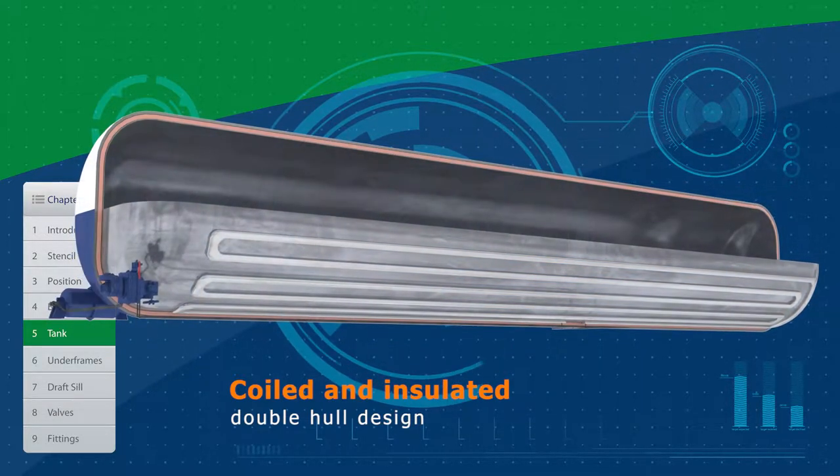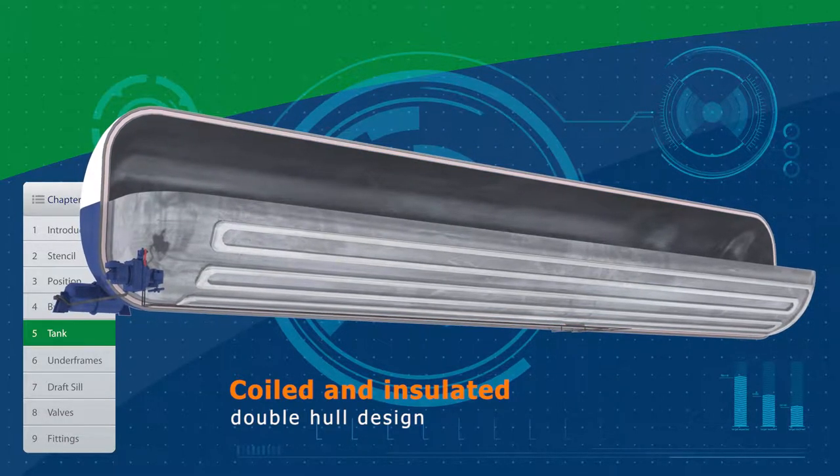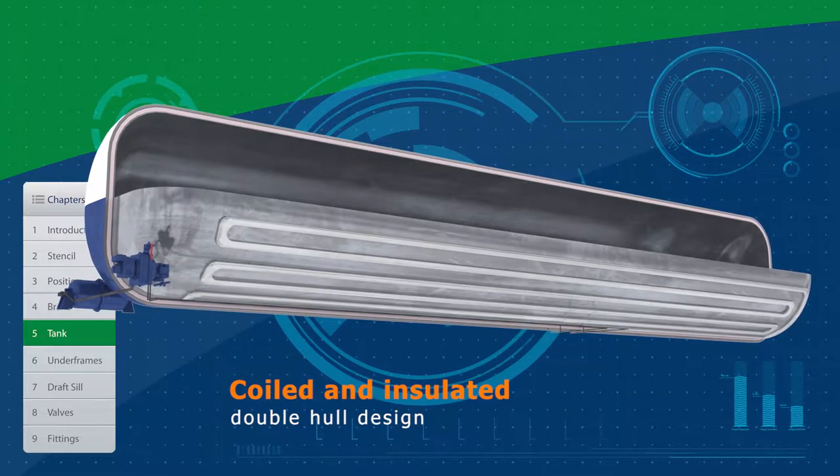Fiberglass insulation is wrapped around the inner tank. A thin external shell called a jacket made of 11-gauge carbon steel encloses the fiberglass insulation.